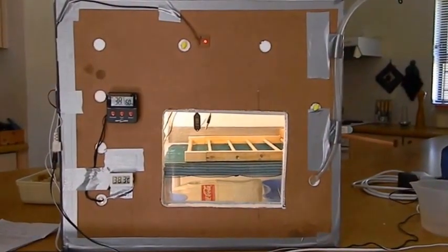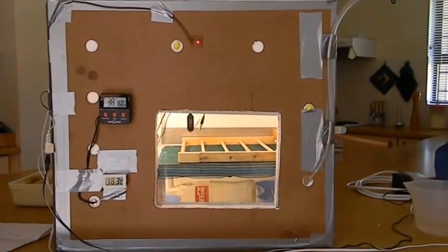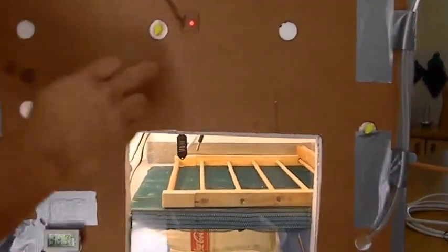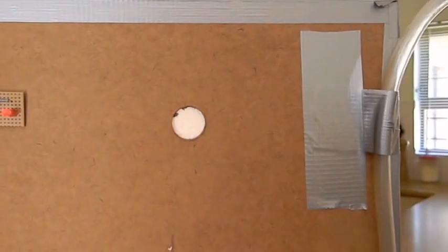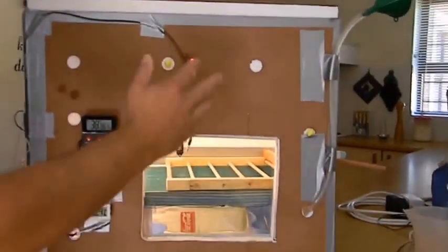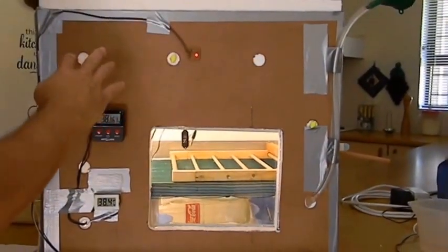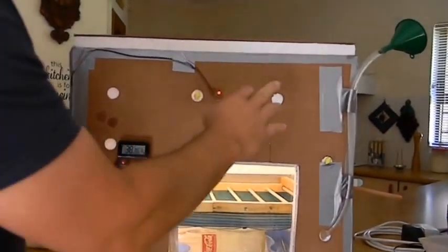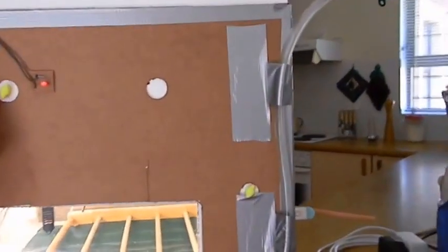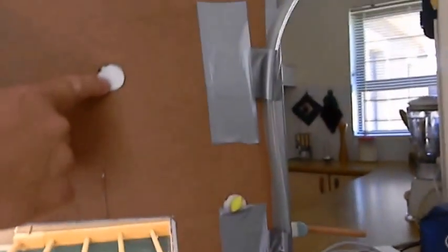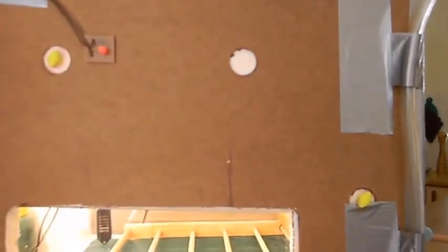The outside of the incubator we then covered with pieces of hardwood board that we cut to size. This is just old hardwood that we had, and the function of the hardwood is really just to protect the polystyrene from any damage. Then you also see that we created these holes in the cardboard just to make sure that we've got access to the polystyrene for the installation of the different components.